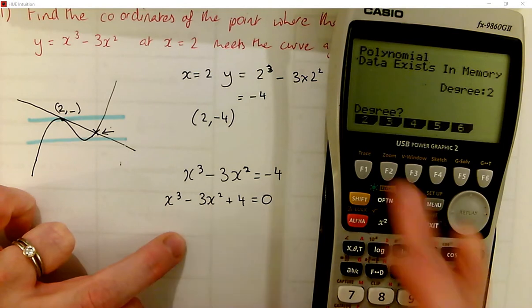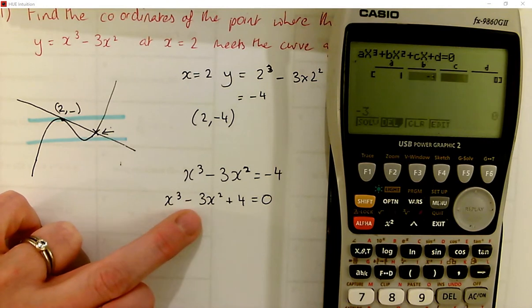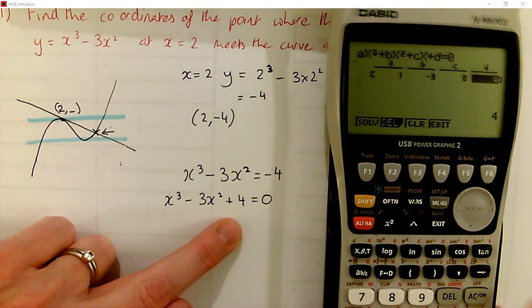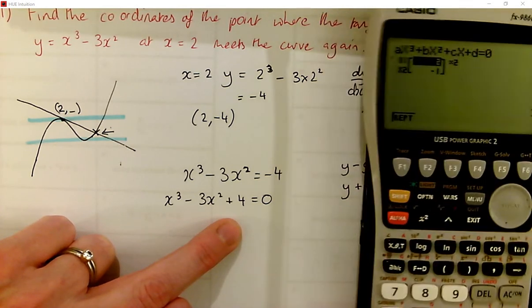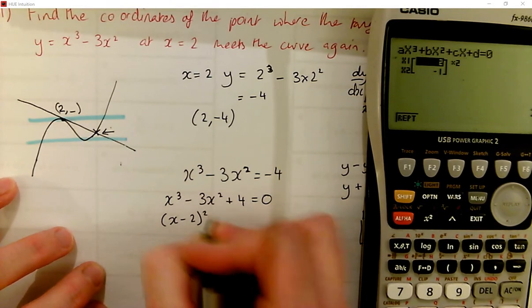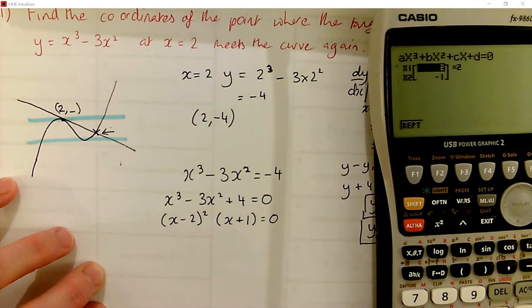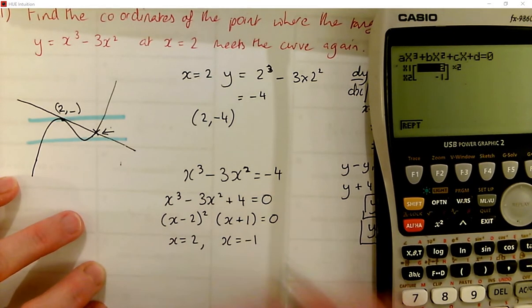So I want to solve the cubic. So I put in my coefficients of x cubed, of x squared, of x, and on its own, and then I ask it to solve it. So there we go. So I've got two lots of x minus 2, if I was factorising, and one lot of x plus 1. So then x is equal to 2, x is equal to negative 1.